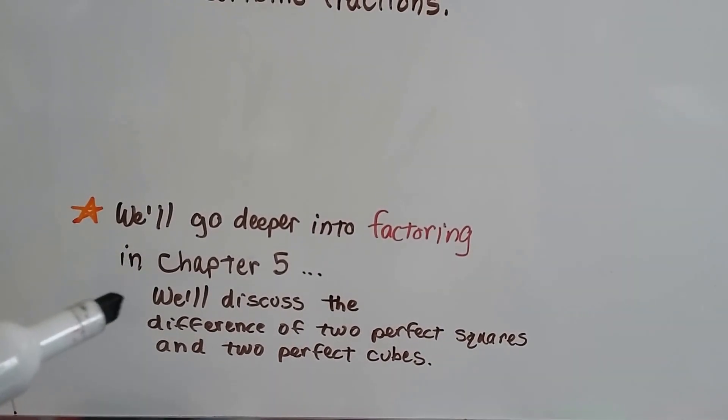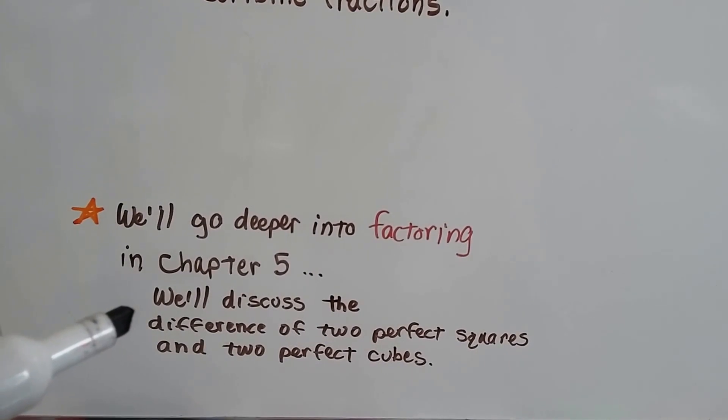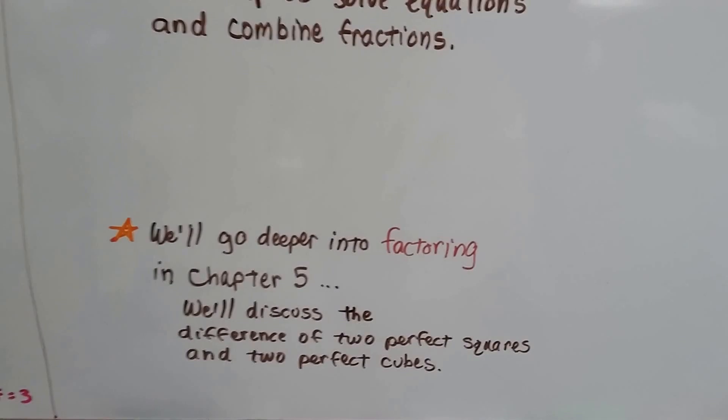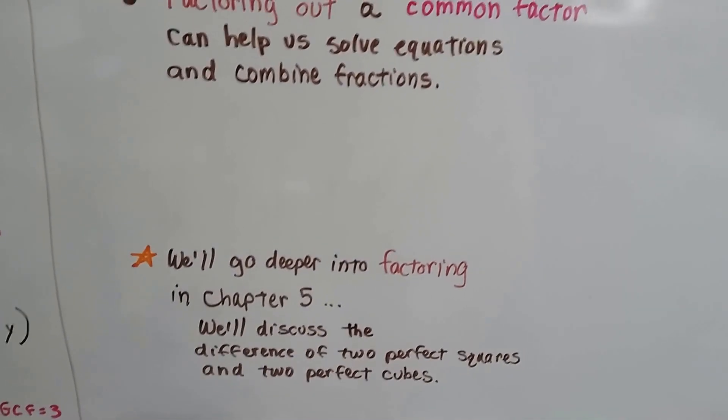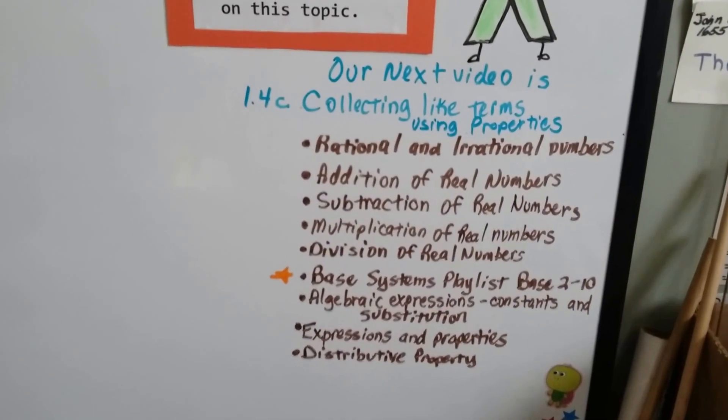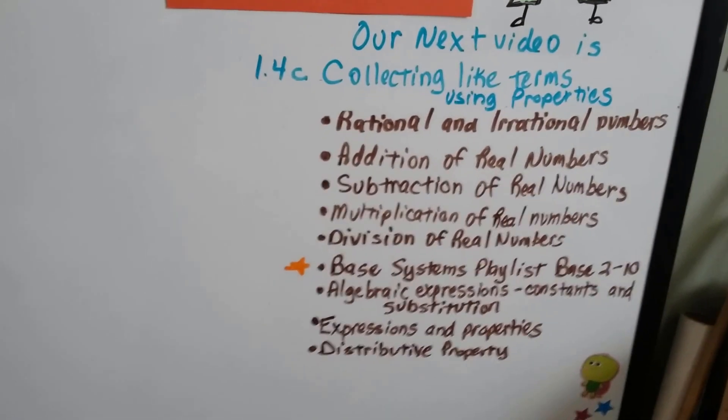You learned about the difference of squares in Algebra 1, but we're going to go a little deeper. That's going to be in Chapter 5. We're only in Chapter 1 now. Our next video is 1.4c. We're going to talk about collecting like terms using the properties, commutative, associative, etc.